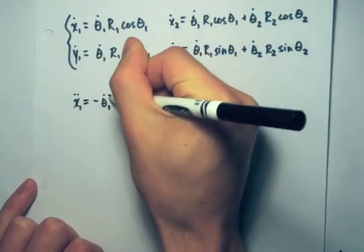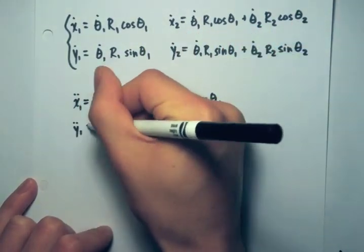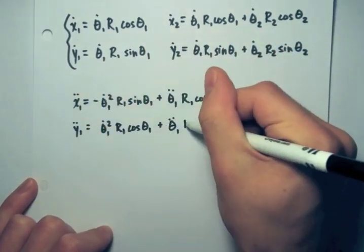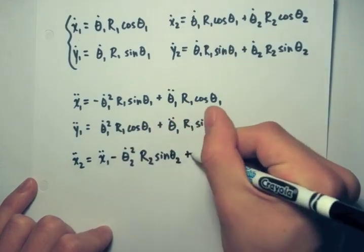Also, for x2 double dot and y2 double dot, which I'm about to write down, I get a little bit lazy, so I write them in terms of x1 double dot and y1 double dot.